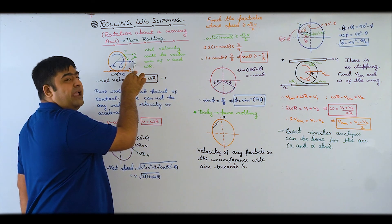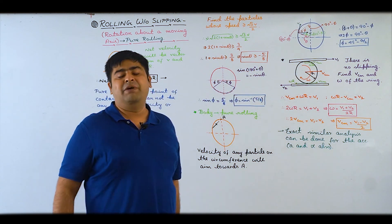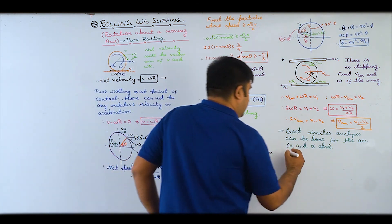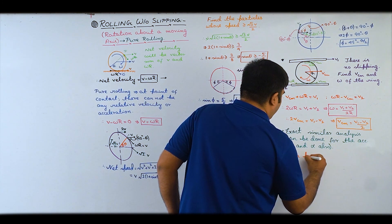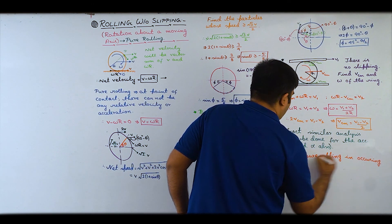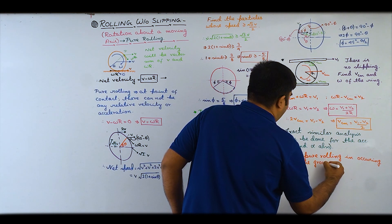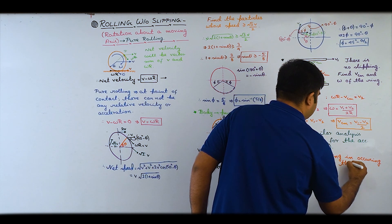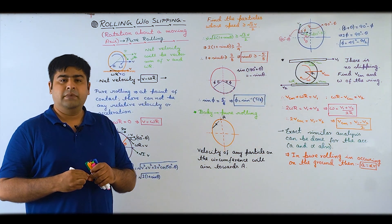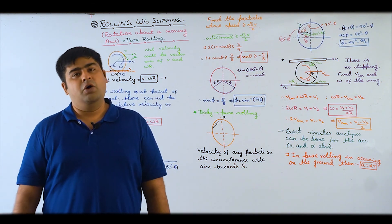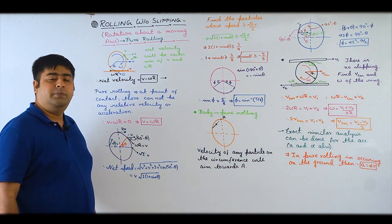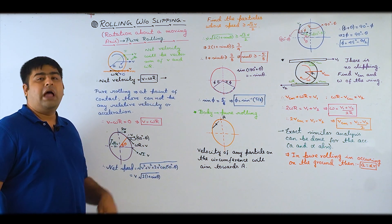V ki jagah A likho, omega ki jagah alpha likho - to jo analysis velocity aur omega ke liye ki hai, similar analysis A aur alpha ke liye bhi kar sakte hain. That implies: if pure rolling is occurring on the ground, then A = alpha·R. Pure rolling ke regarding kuch basic properties humne yahan dekhi hain, aur aage bhi aur dekhne wale hain.